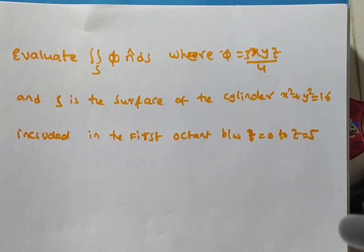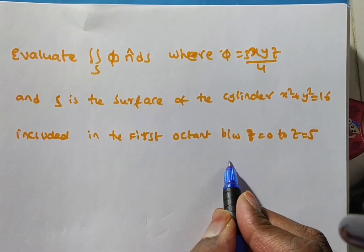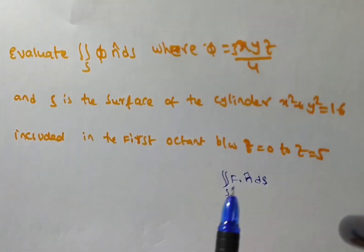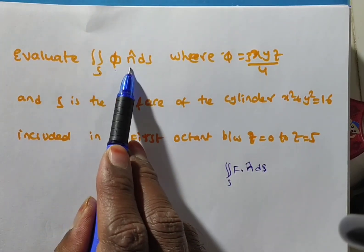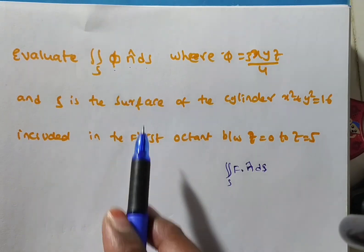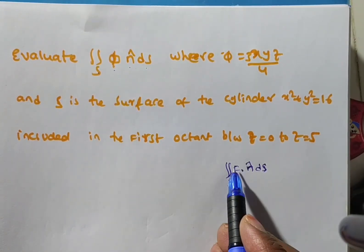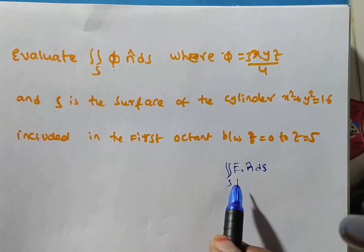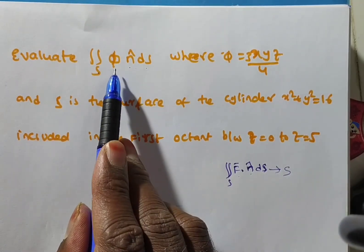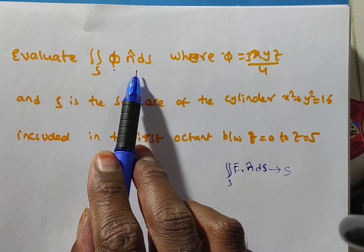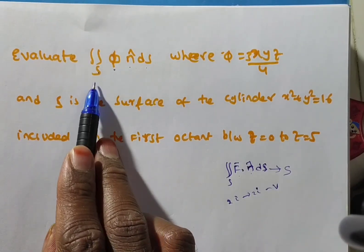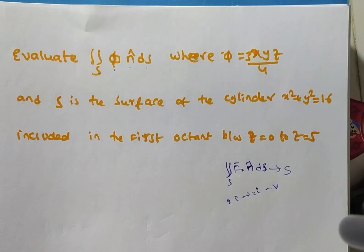Hi friends. In this video we are discussing a problem on surface integral. Till now we have done problems on surface integral evaluating double integral over S of F̄·n̂ dS, but in this problem we are doing double integral over S of φn̂ dS, where n̂ is the outward unit normal vector. The difference is: F̄ is a vector and n̂ is a vector, their dot product gives a scalar, so the integration gives a scalar. But here φ is a scalar point function and n̂ is a vector — scalar times vector gives a vector, so the integral becomes a vector.